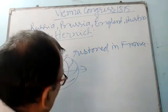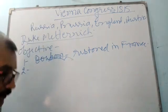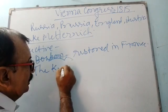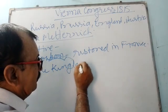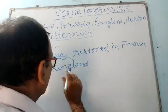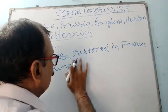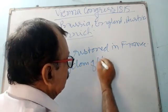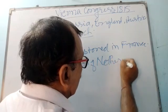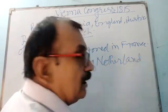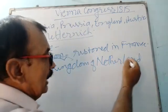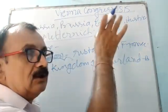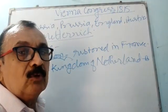In the North, the Kingdom of Netherlands was created, so that a strong kingdom could be established in the North to prevent French aggression.